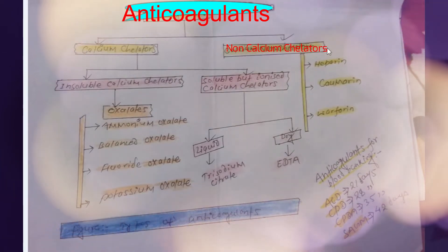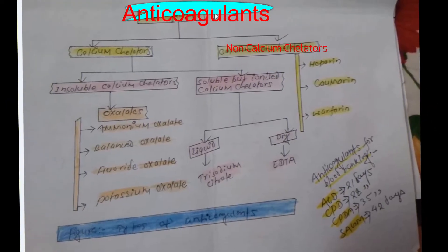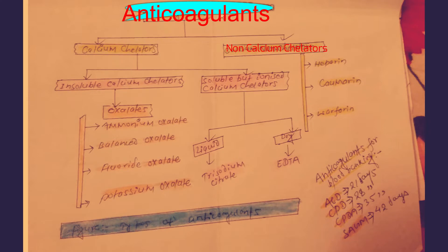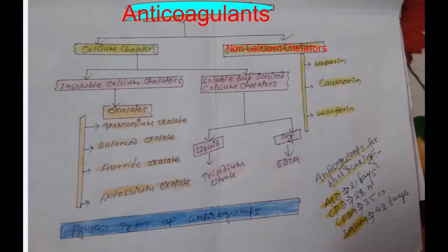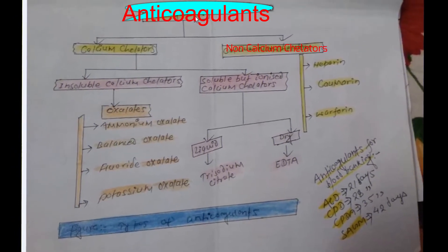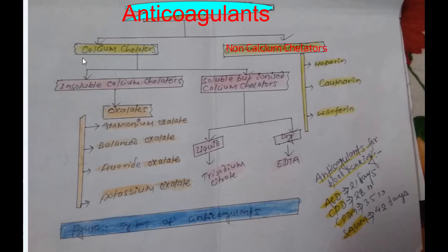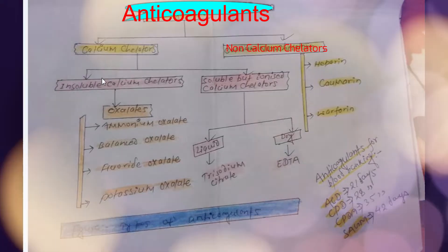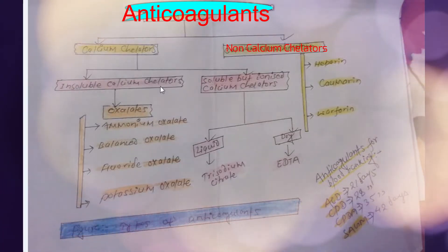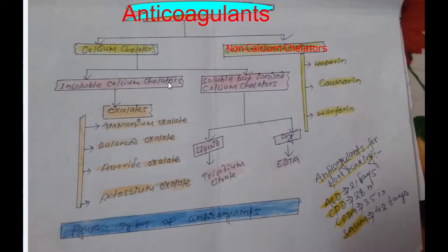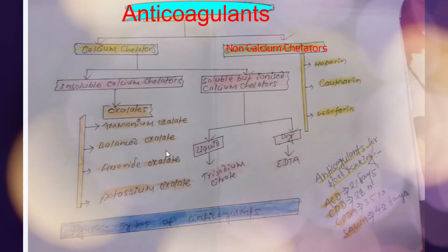Today we are concerned with anticoagulants. Anticoagulants are chemicals or agents which prevent the coagulation of blood. They are of two types: calcium chelators and non-calcium chelators. Calcium chelators are further subdivided into two parts: insoluble calcium chelators and soluble but ionized calcium chelators. Insoluble calcium chelators are also called oxalate, and are of four types: ammonium oxalate, valence oxalate, fluoride oxalate, and potassium oxalate.